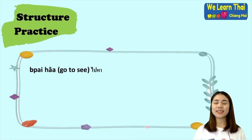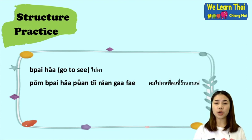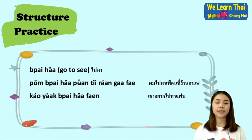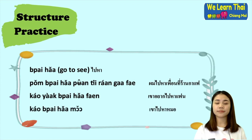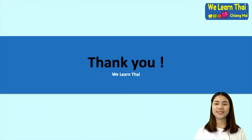The next structure uses the word 'bai ha', meaning 'go to see'. For example: I am going to see a friend at the coffee shop. He or she wants to go to see their girlfriend.